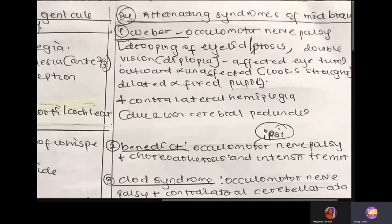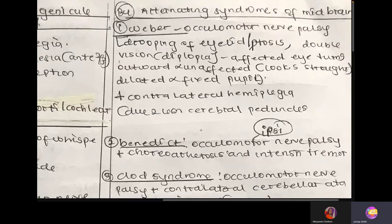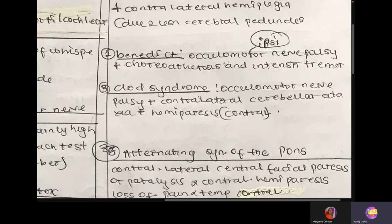Now we'll talk about alternating syndromes — of the midbrain, pons, and medulla. Alternating syndrome means you see a presentation on one side and another presentation on the opposite side. For the midbrain, we have Weber, Benedict, and Claude syndromes. Weber alternating syndrome: oculomotor nerve palsy on the ipsilateral side and contralateral hemiplegia. Benedict syndrome: ipsilateral oculomotor nerve palsy and contralateral cerebellar ataxia — intention tremor, choreoathetosis.